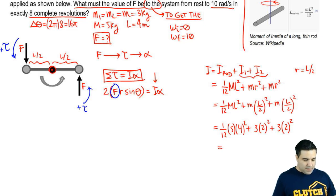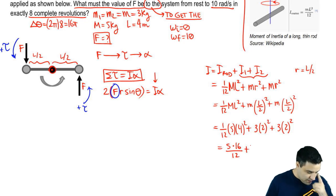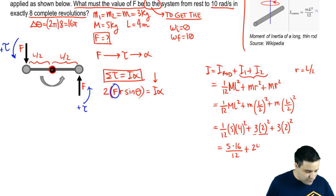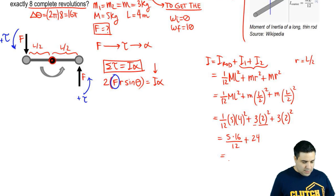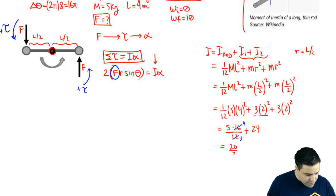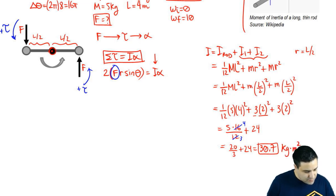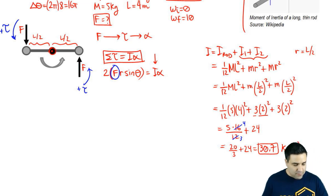Working this out: five times 16 over 12 plus four times three is 12 plus 12, which is 24. Simplifying 80/12 — dividing by 4 gives 20 over 3. So we have 20/3 plus 24, which comes out to roughly 30.7 kilograms meter squared. So I equals 30.7 kg·m².